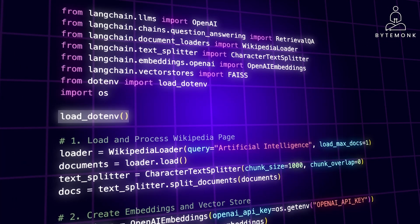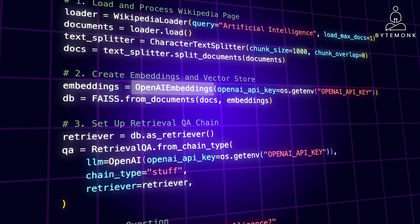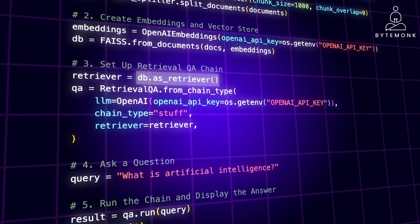Let's understand everything with a simple code example. The purpose of load_dotenv is to load environment variables from a .env file into your Python environment. The first step is to load and process the Wikipedia page — the Wikipedia loader fetches the content of a Wikipedia page about artificial intelligence. The CharacterTextSplitter splits the loaded documents into smaller chunks for faster and optimal processing. OpenAI Embeddings creates embeddings for each text chunk, and FAISS builds a vector store from those embeddings for efficient similarity search. Finally, db.as_retriever creates a retriever from the vector store that finds relevant documents based on similarity search when given a query.